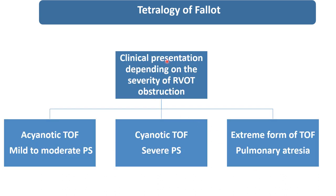Clinical presentation depends on the severity of right ventricular outlet tract obstruction. If the patient is having mild to moderate PS, then patient will have the acyanotic TOF, which is our case, in which patient was not having cyanosis because of mild pulmonary stenosis.